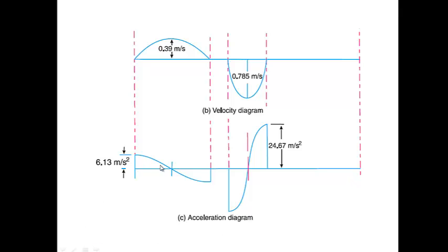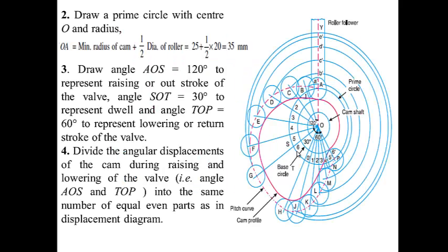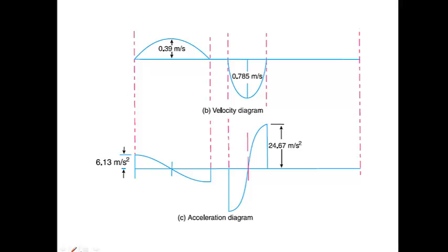We draw these points with the help of a smooth curve to obtain the displacement diagram for the follower in case of simple harmonic motion. This is the velocity diagram for the follower and this is the acceleration diagram for the follower. This is the maximum velocity of the follower for the outward stroke, and the maximum velocity during the return stroke. These are the maximum accelerations for the outward stroke and return stroke respectively.